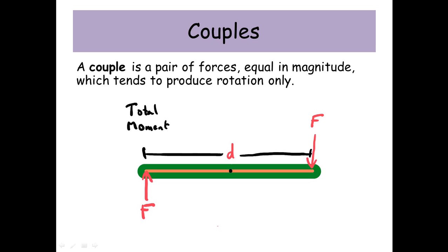The distance between either force and the pivot is half D. For each of these forces, the moment produced is half F times D. The other force also produces half F times D.